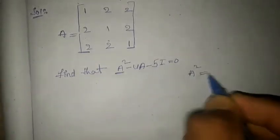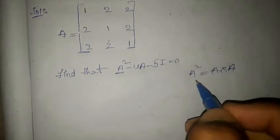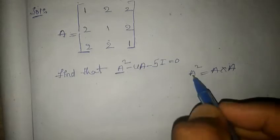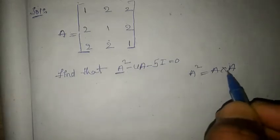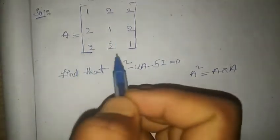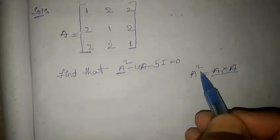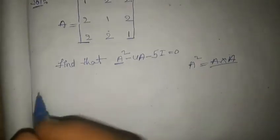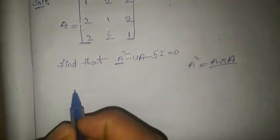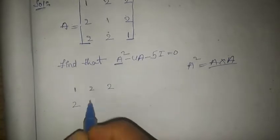We know that A² = A × A. So we have to substitute in this formula to find A². The given A value is [[1,2,2],[2,1,2],[2,2,1]], and we substitute it into this method.